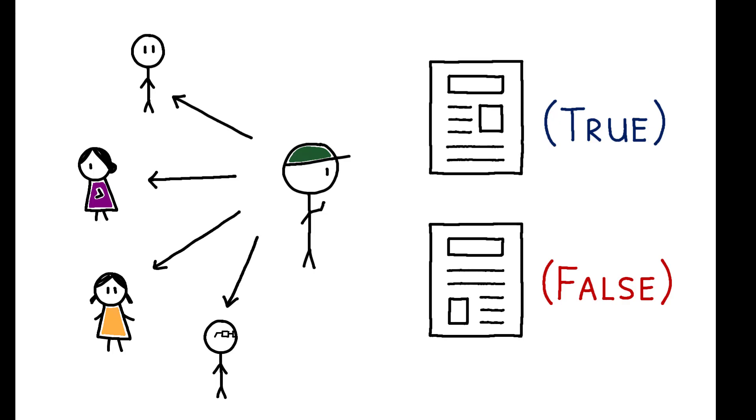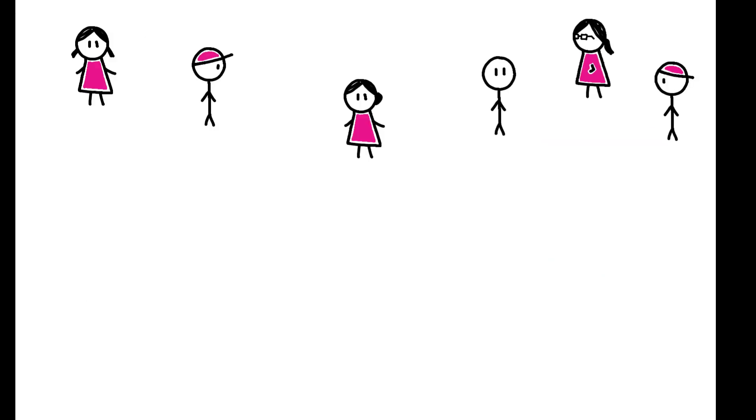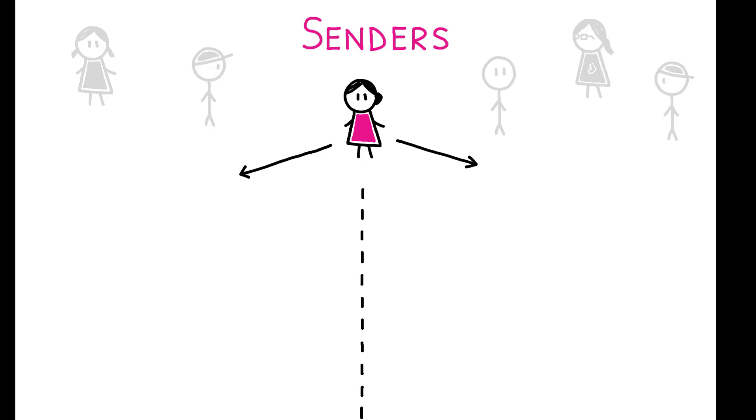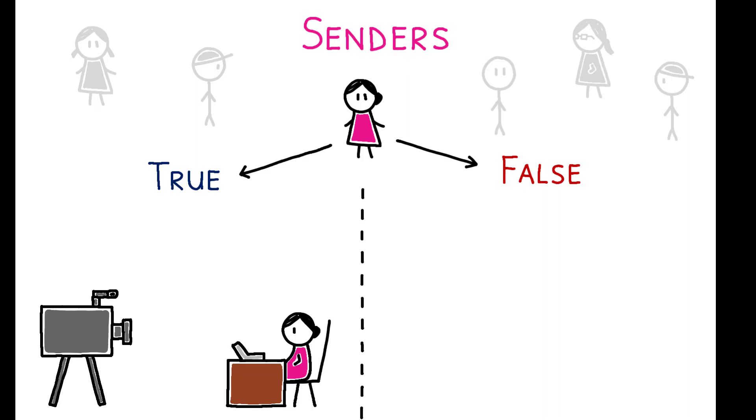To answer these questions, the authors conducted the following lab experiment. Individuals were recruited to participate as senders, and each recorded two 30-second videos, one true and one false. For the true video, the sender was shown a real newspaper headline and picture and asked to describe it.